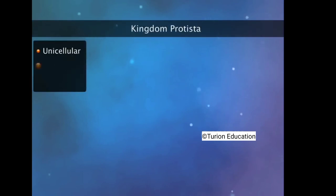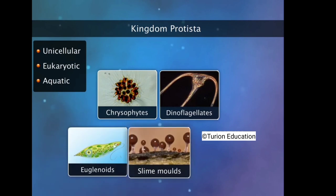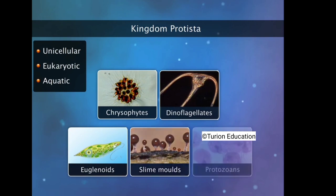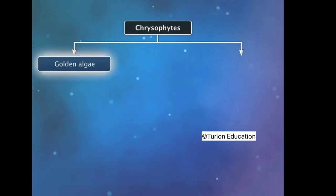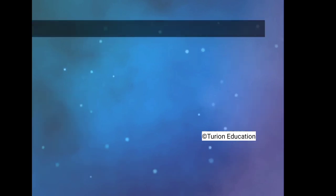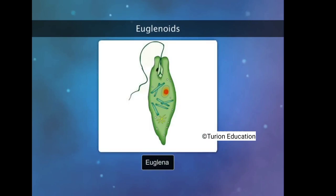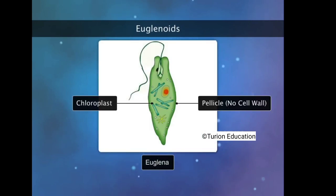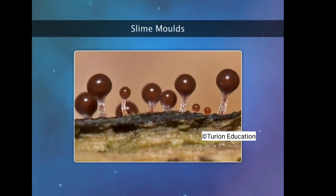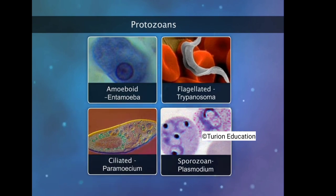Kingdom Protista includes unicellular, eukaryotic, and primarily aquatic organisms grouped as chrysophytes, dinoflagellates, euglenoids, slime molds, and protozoans. Chrysophytes include photosynthetic golden algae and diatoms, acting as primary producers of the aquatic ecosystem. Dinoflagellates are photosynthetic, contain two flagella, and have yellow, green, brown, blue, or red pigments. Euglenoids are photosynthetic and contain a protein-rich pellicle instead of a cell wall. Slime molds are saprophytic. Protozoans are heterotrophic and grouped into amoeboid, flagellated, ciliated, and sporozoan types.